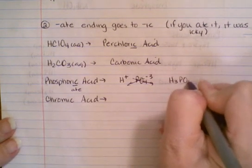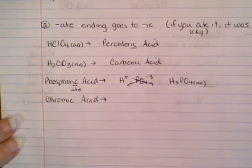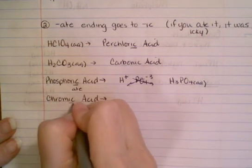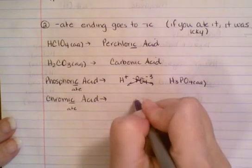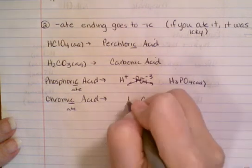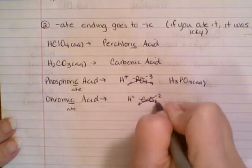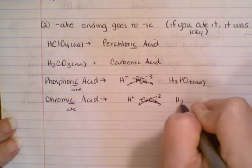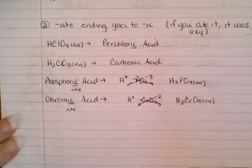And chromic—chromic comes from -ate, so we're looking for the chromate ion, which is CrO4 with a minus two charge. Hydrogen is plus one. They're different again, so I'm going to have to crisscross again: H2CrO4(aq).